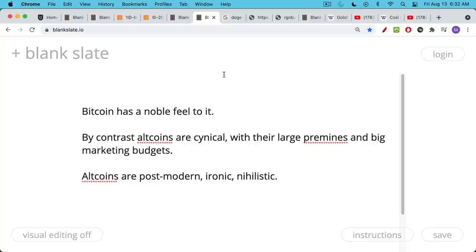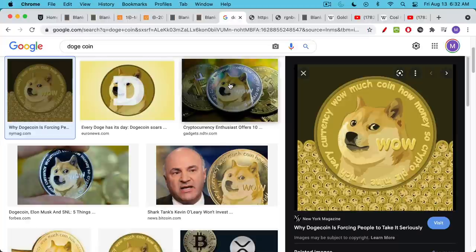Bitcoin has this very noble, beautiful feel to it. And when you study altcoins, by contrast, they're much more cynical. They have these large pre-mines. They have large marketing budgets. And they're basically mostly corporations masquerading as decentralized protocols, but actually having these unregistered securities. So Bitcoin is noble. By contrast, altcoins are cynical. They're postmodern. They're ironic. They're nihilistic as well.